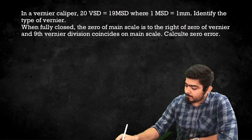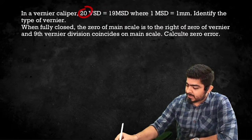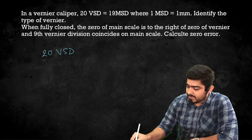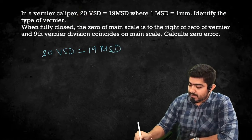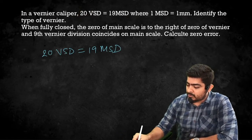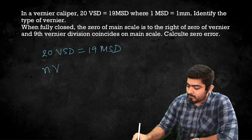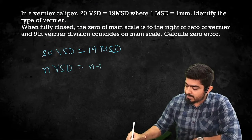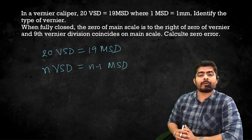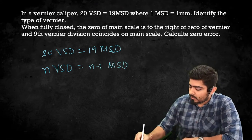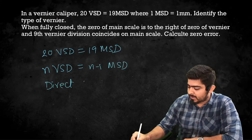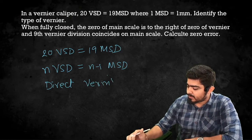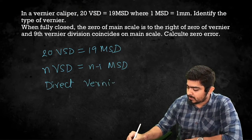Look here — how many Vernier Divisions are there? 20. So 20 VSD is equal to 19 MSD. Writing it as N VSD = (N−1) MSD, this is a regular direct Vernier. So this is a direct Vernier — that is not a problem.